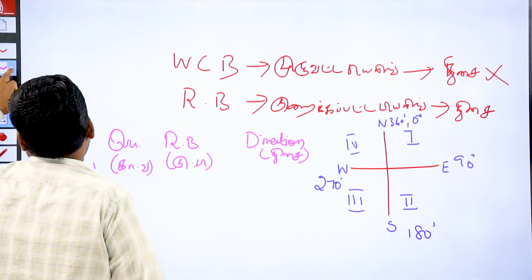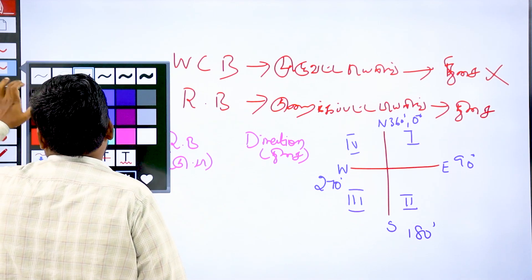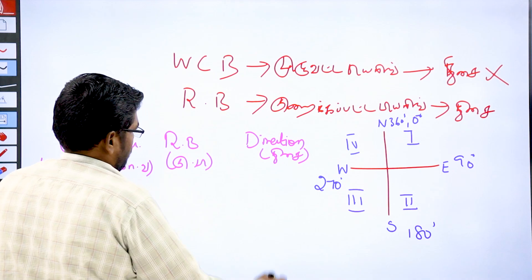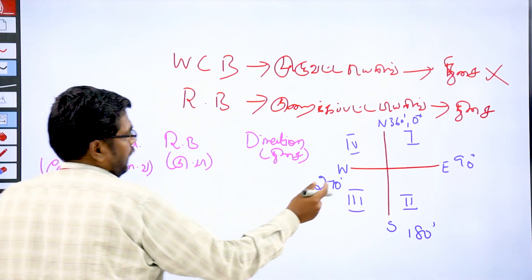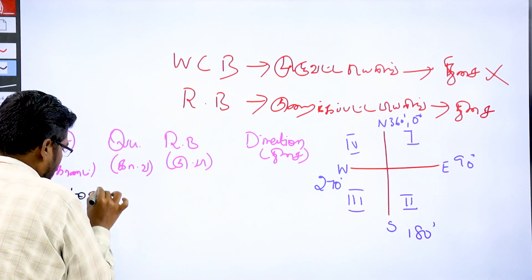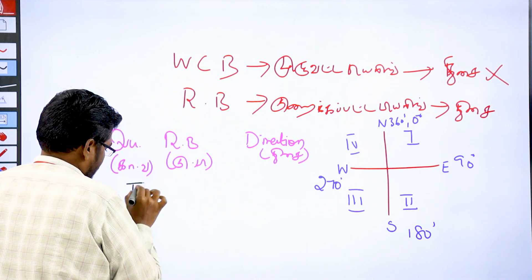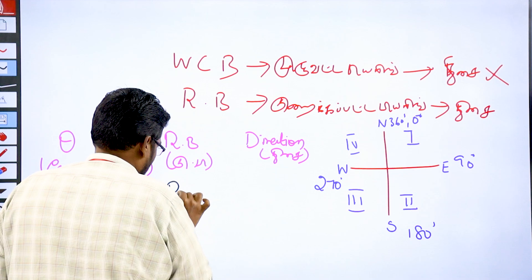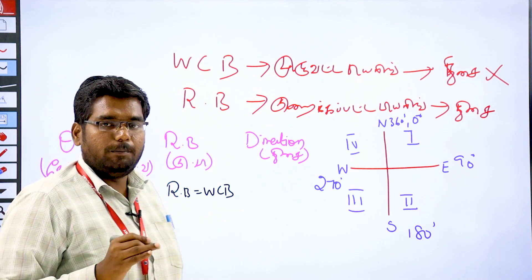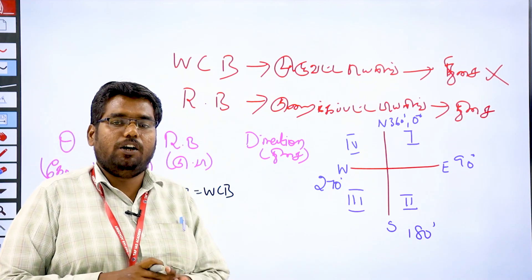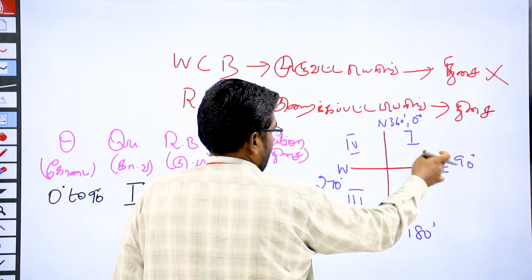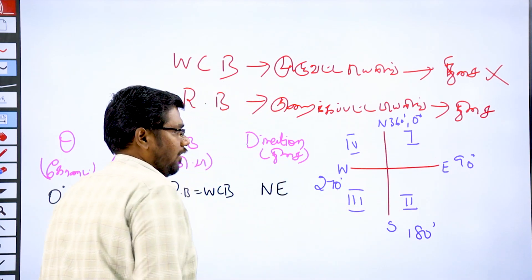Now, in the tabulation form: for the first quarter, the WCB range is 0 to 90 degrees. The reduced bearing formula is RB equal to WCB. The direction is North East.